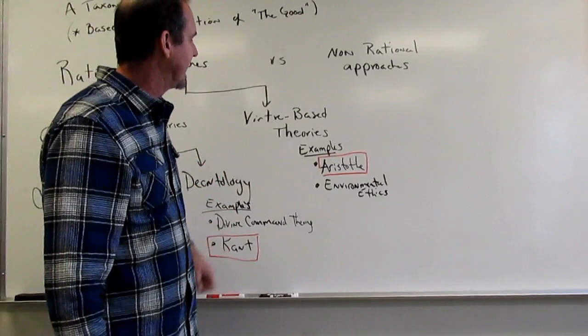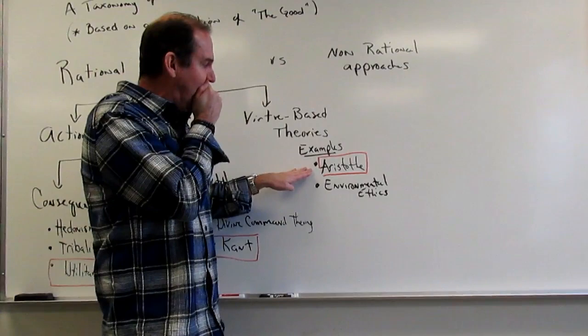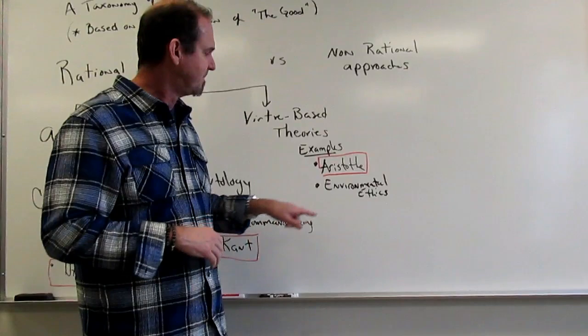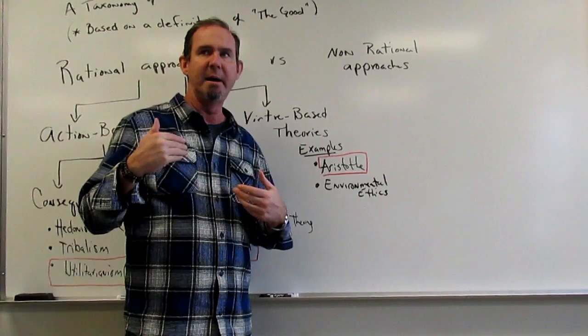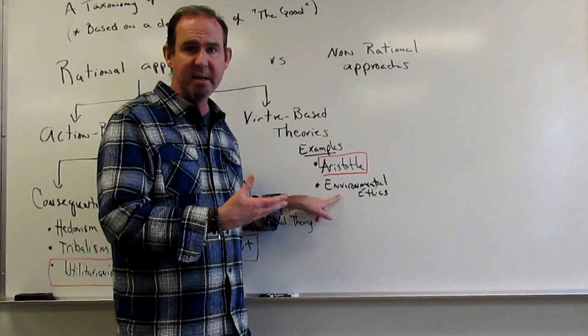We'll start here. As far as virtue-based theory goes, the best example we're going to look at is Aristotle's theory. Aristotle believes that what counts as good are people. When you look at that film and read the reading, keep that in mind. Another example of virtue ethics would be environmental ethics, where the goal isn't good or bad actions, but to act in a way that produces a good, sustaining environment.